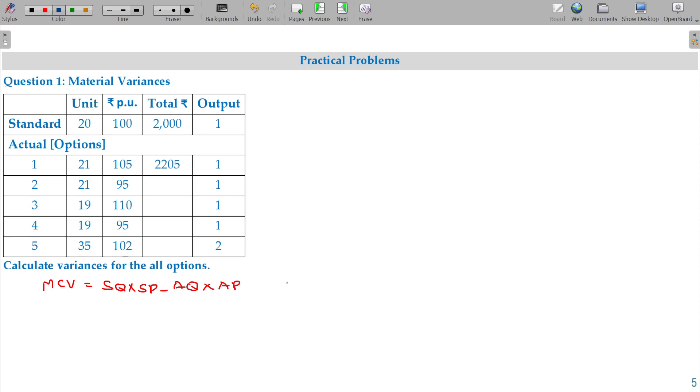Material price variance is equal to standard price minus actual price into actual quantity. Material quantity variance is equal to standard quantity minus actual quantity multiplied with the standard price.